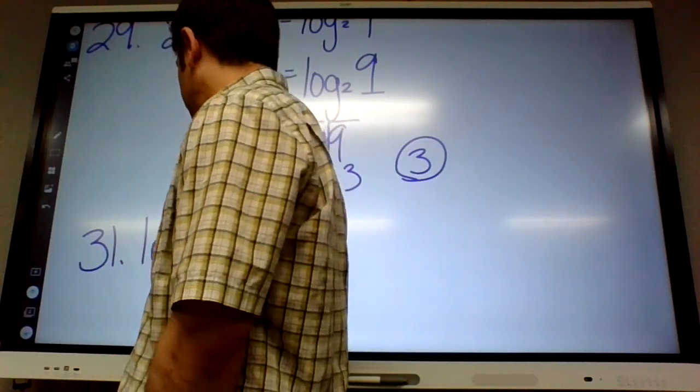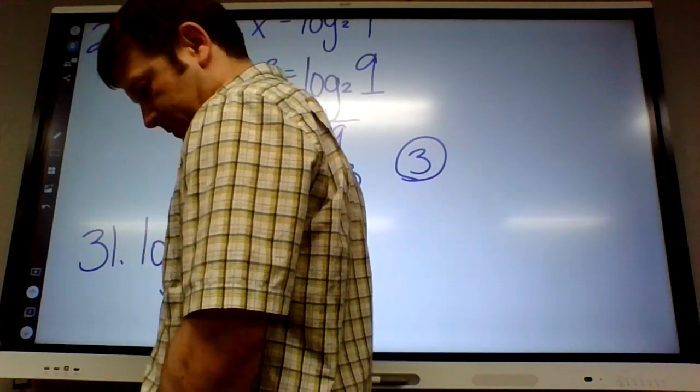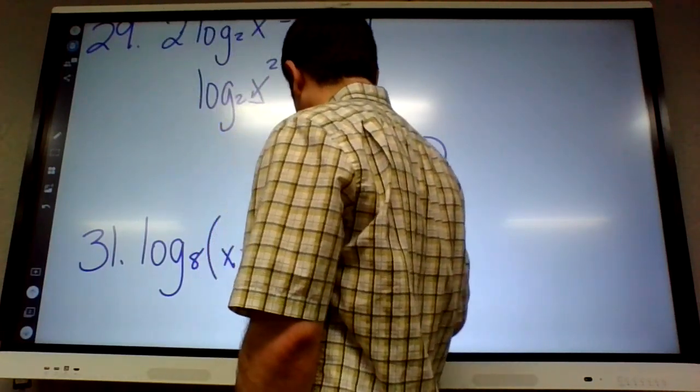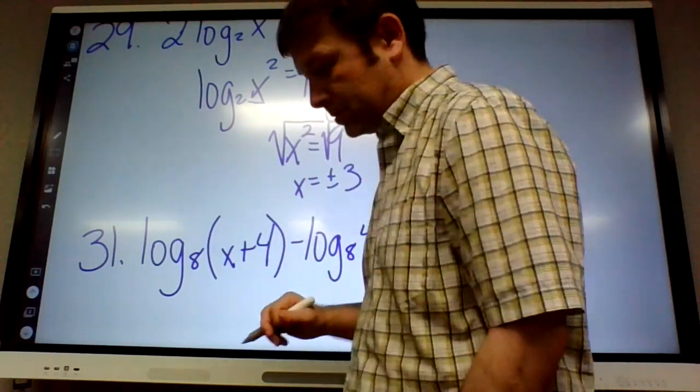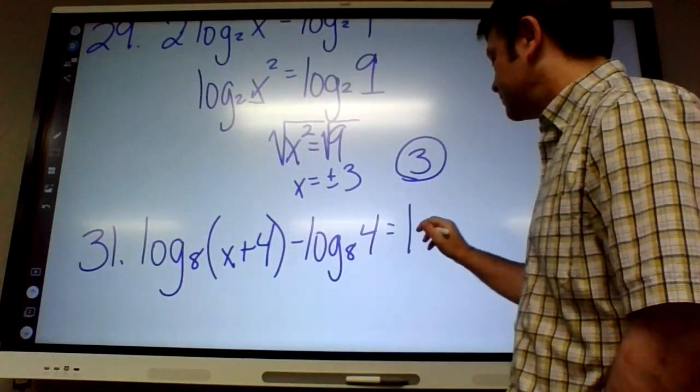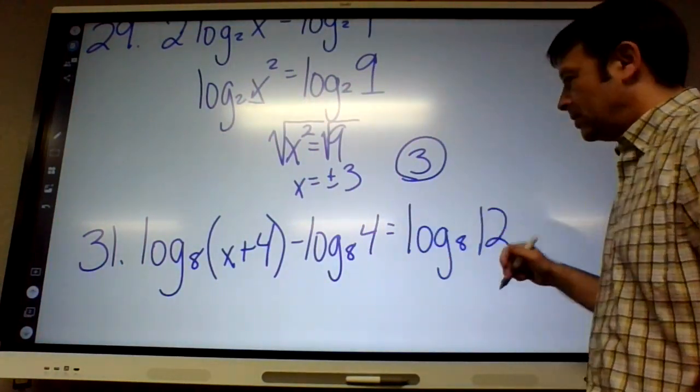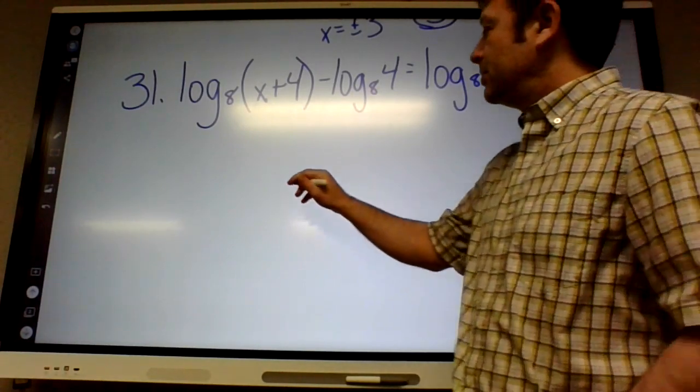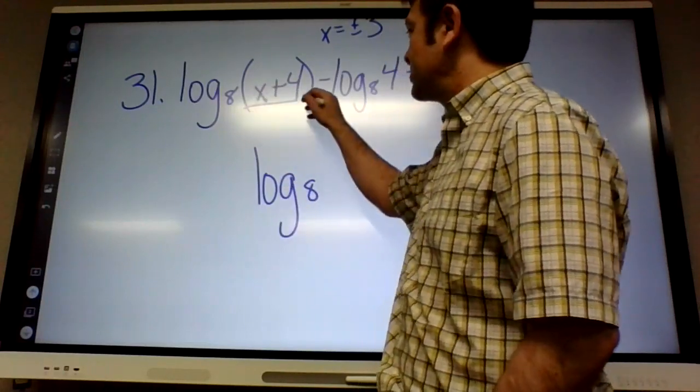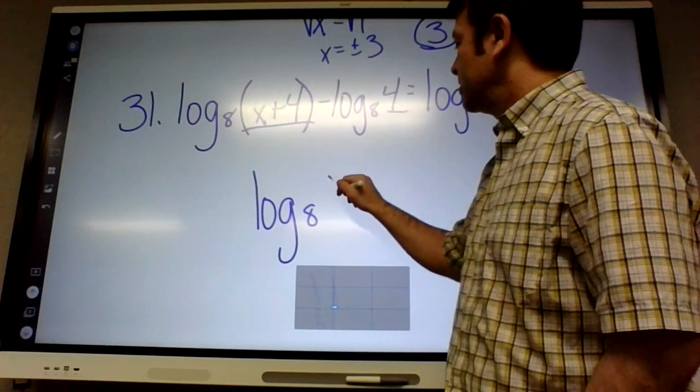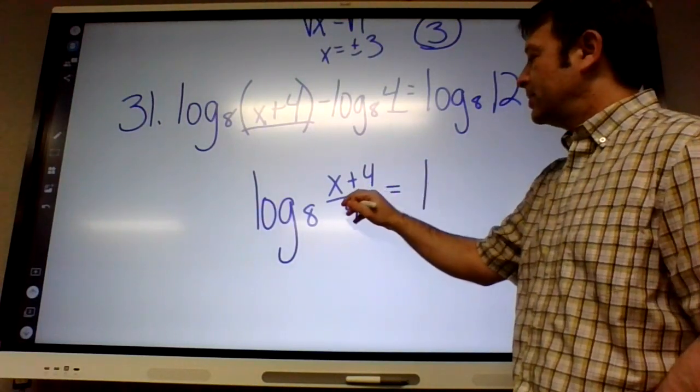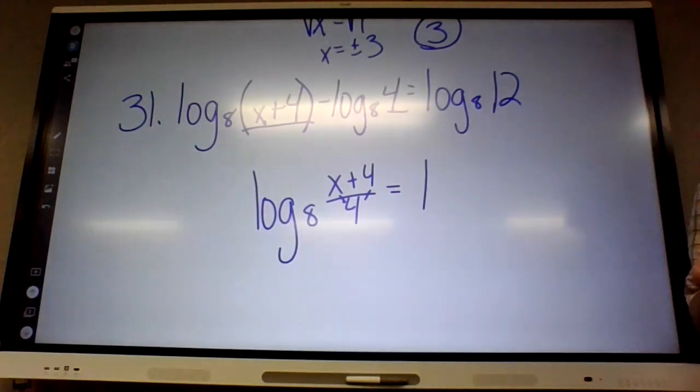31. Log base 8 of x plus 4 minus log base 8 of 4 equals log base 8 of 12. What am I going to do to the left side? If you're subtracting, what do you do? Divide. So this is log base 8 of this divided by this. Now, does that simplify? No. You can't divide out the 4s. If it was 4x divided by 4, because multiply and divide are opposites, you could do that. But when it's two different terms, you can't do that.